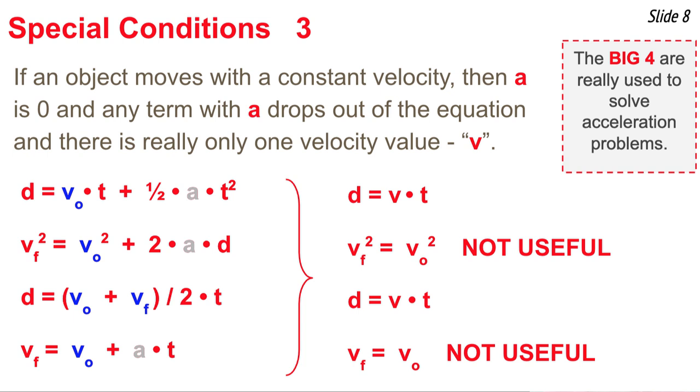You'll also notice that the second and the fourth equation are not useful at all. Certainly you don't need to know physics in order to tell that the final velocity is equal to the original velocity when it's not changing. These big four equations are typically not used for constant velocity problems. We just typically use d equals v times t, but we instead use these four equations for accelerating problems in which there's an acceleration.